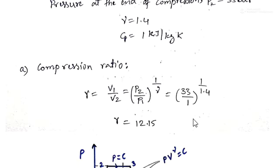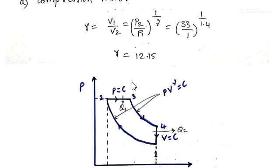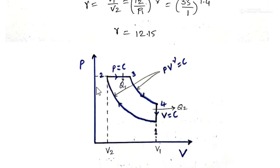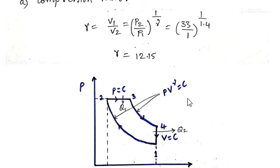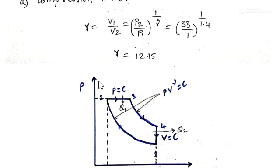For the first part, we calculate the compression ratio. In the ideal diesel cycle, V1 by V2 is the compression ratio. Process 1 to 2 is a reversible adiabatic process. For an adiabatic process, the relation between volume and pressure is V1 by V2 = (P2 by P1) to the power of 1 by gamma.